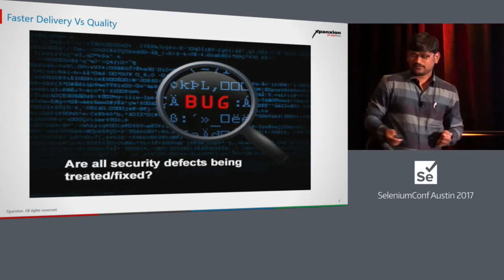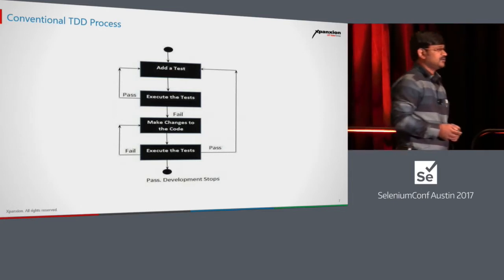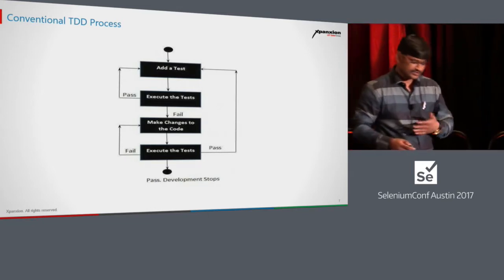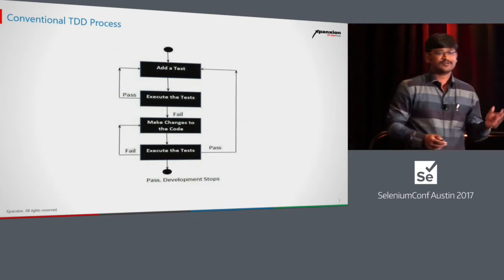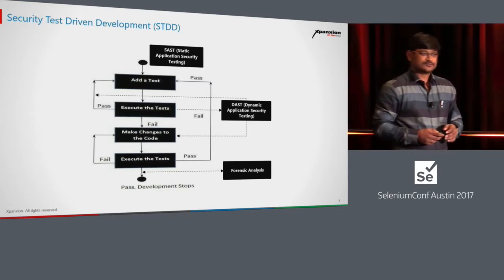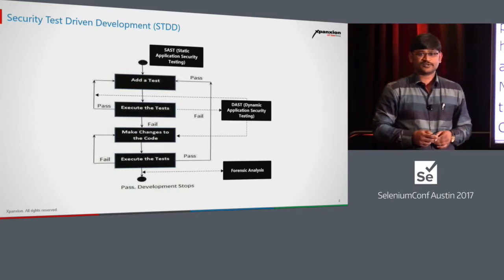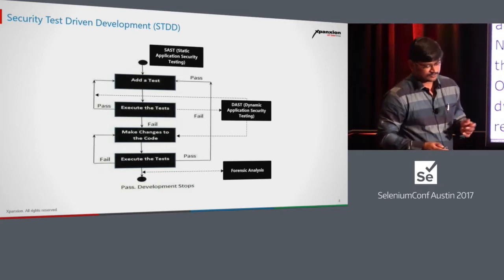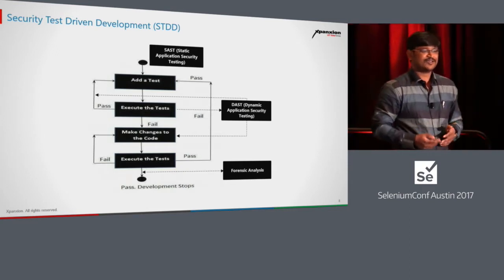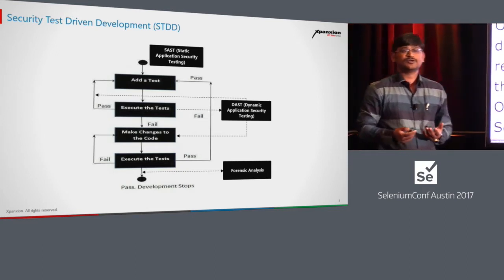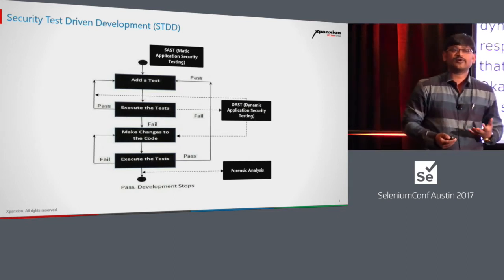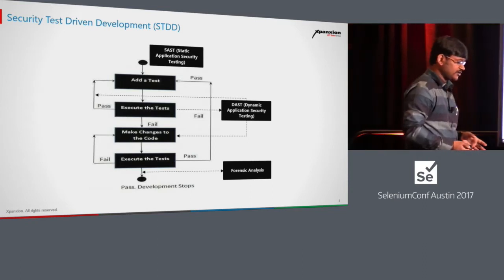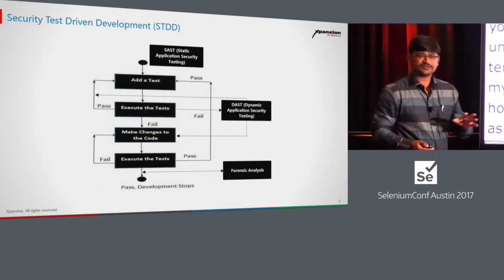Let's take a conventional TDD process: add a test, execute it — if it succeeds, add another test, create a suite. Now let's try to include a security angle to that. How many of you understand static, dynamic, and forensic analysis? Static analysis is from the coding side — tools like FindBugs help you understand where your code has vulnerabilities and how to improve from a security perspective, along with other aspects like performance.